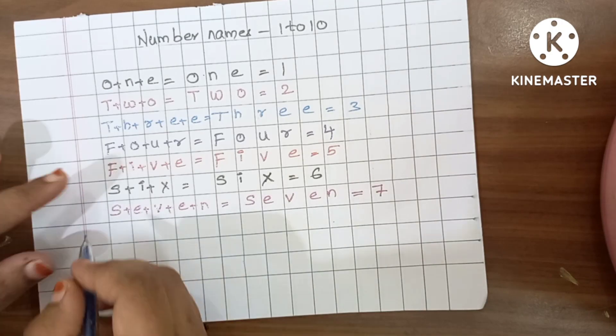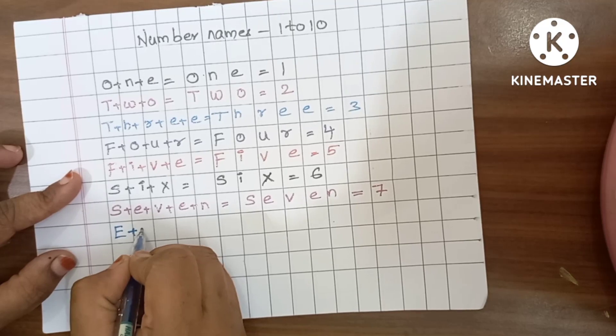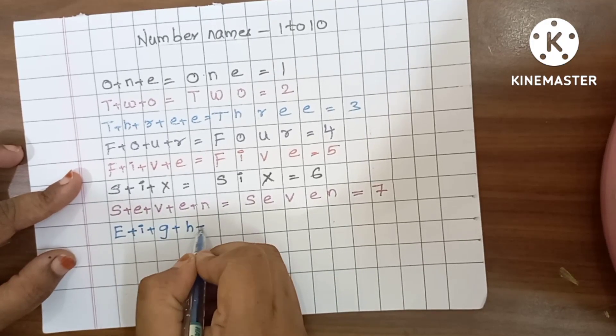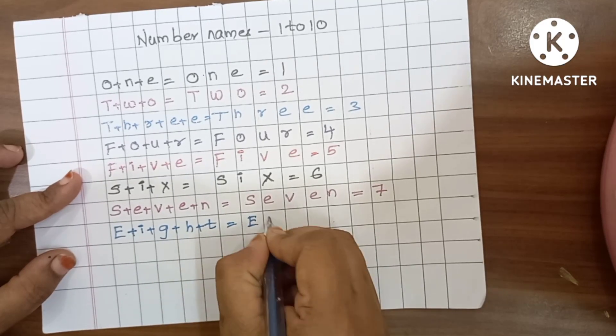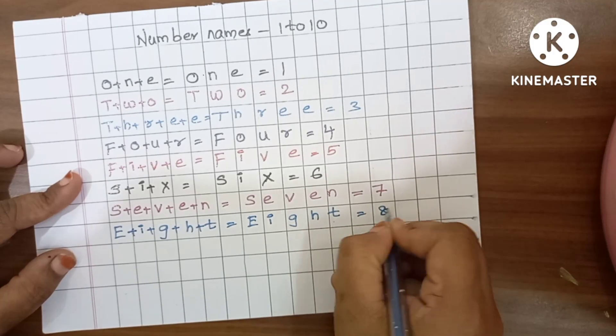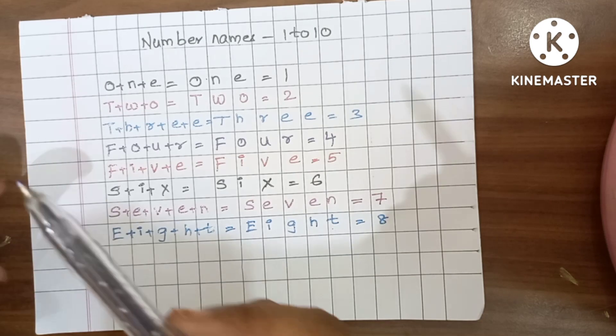Sky color. 8. E plus I plus G plus H plus T is equals to 8. E, I, G, H, T, 8. Bring your color.